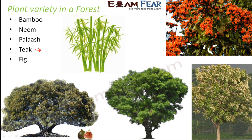If you look at the fig tree, you see the crown is spread out widely, but the teak tree is not that spread out. Compare it with bamboo and it looks different again — it doesn't have that kind of crown at all. So every plant has a different shape, but all of these are mostly big trees.